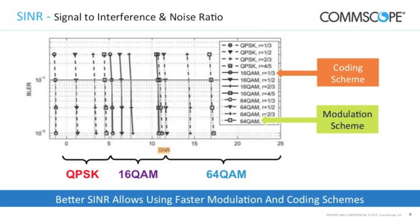Shannon's Law is not linear — you see jumps in performance. If you go over a specific threshold of signal-to-noise ratio, you can utilize higher modulation schemes. QPSK is not a very high data rate; 16 QAM is very common. If you can get to 64 QAM, that gives you really the best data rates right now — great throughput and performance for downloading and uploading videos.